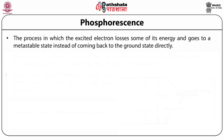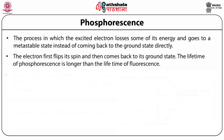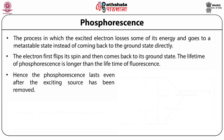Phosphorescence: the process in which the excited electron loses some of its energy and goes to a metastable state instead of returning directly to the ground state. The metastable state has different multiplicity than the ground state, so the electron cannot return to the ground state directly. The electron first flips its spin and then comes back to the ground state. The lifetime of phosphorescence is longer than fluorescence, hence phosphorescence lasts even after the excitation source has been removed.